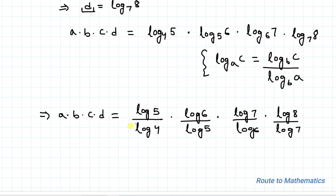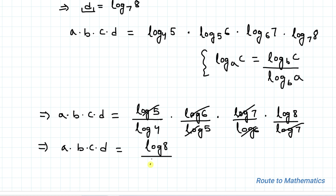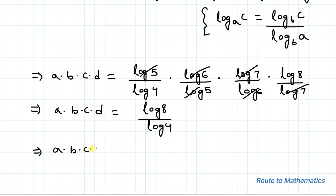You can see that log 5 in the numerator cancels with log 5 in the denominator. Similarly, log 6 cancels with log 6, and log 7 cancels with log 7. So we have a times b times c times d equals log 8 divided by log 4.